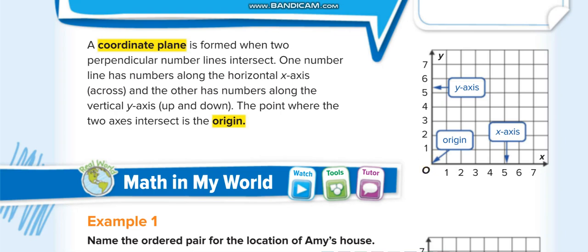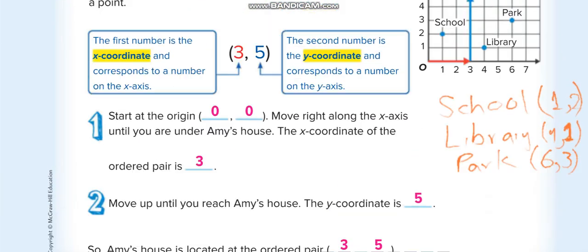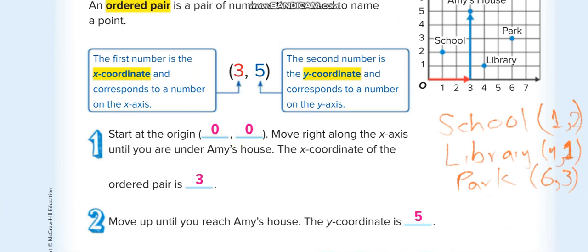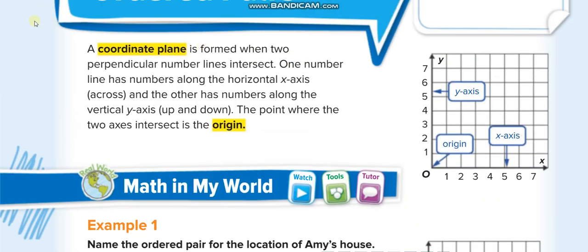Where these two lines meet, we call it the origin. This point is 0 for the X-axis and 0 for the Y-axis. We write it as (0, 0).